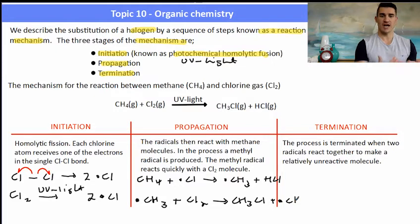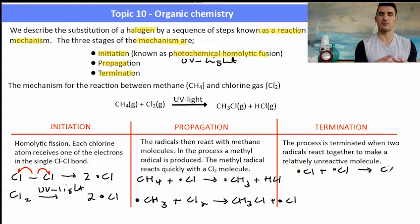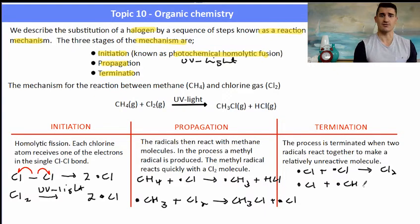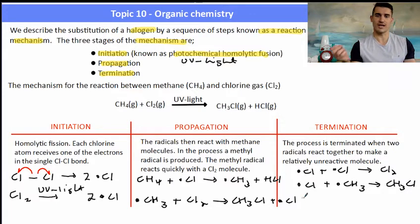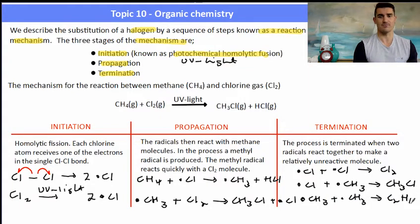This is a chain reaction — radicals keep being formed. Eventually termination occurs when two radicals collide to form an unreactive molecule. That could be two chlorine radicals forming Cl₂, a chlorine radical and a methyl radical making a substituted alkane, or in an unlikely case two methyl radicals forming ethane. Either way, that stops the reaction because an unreactive molecule is produced.